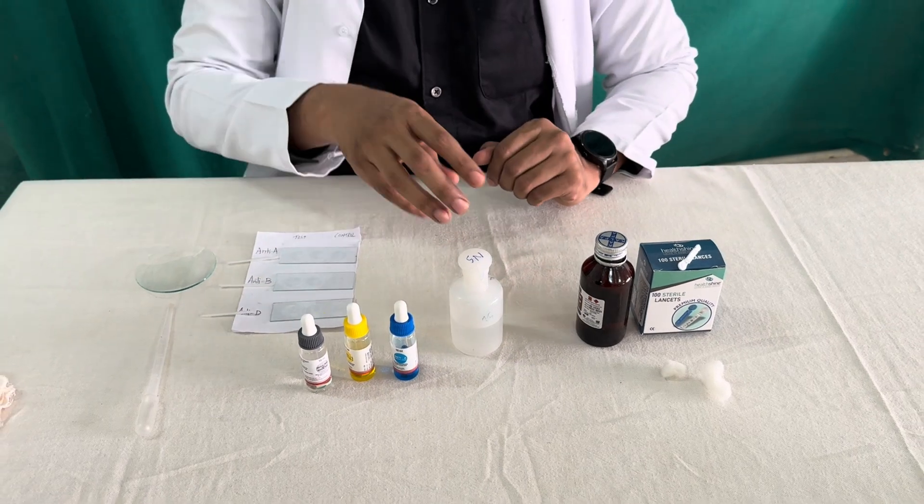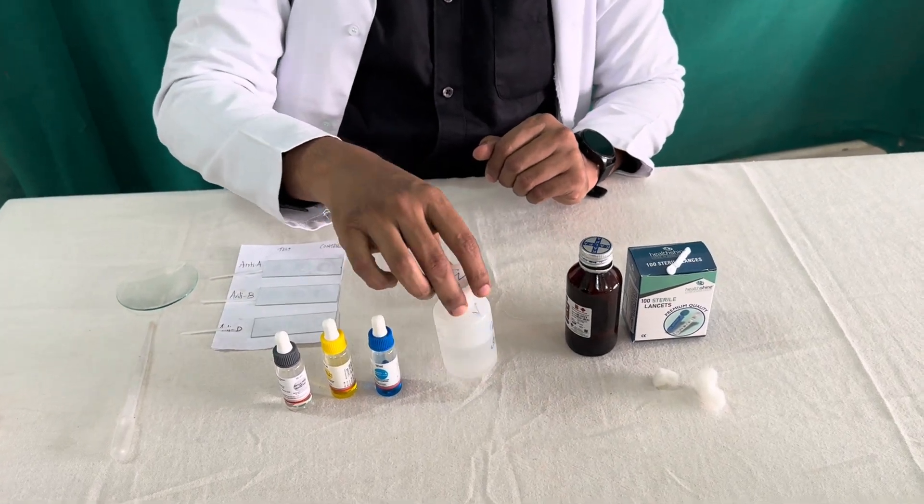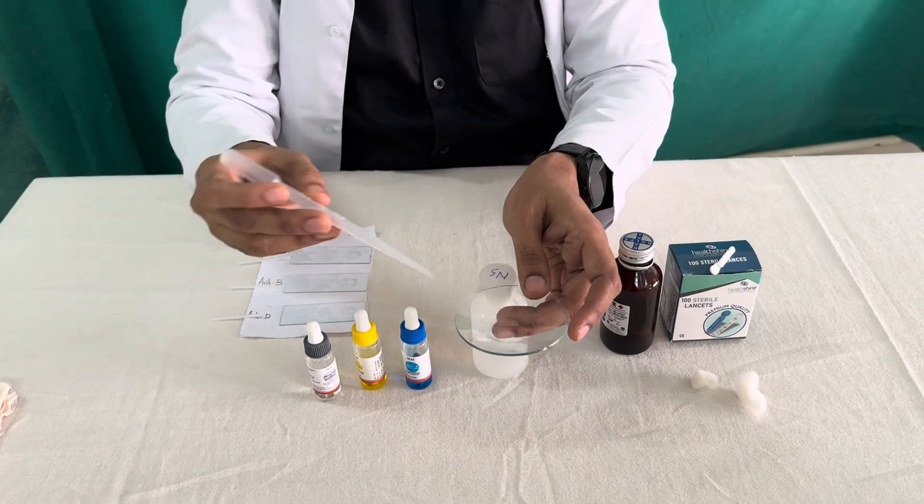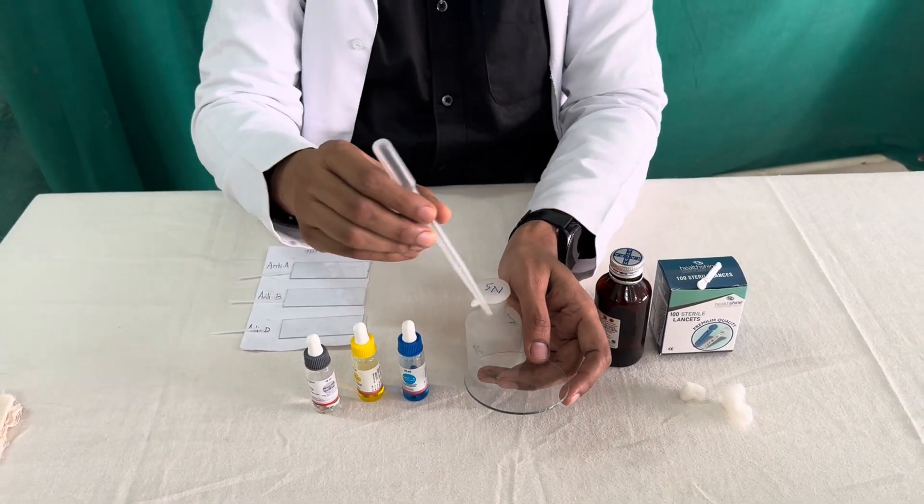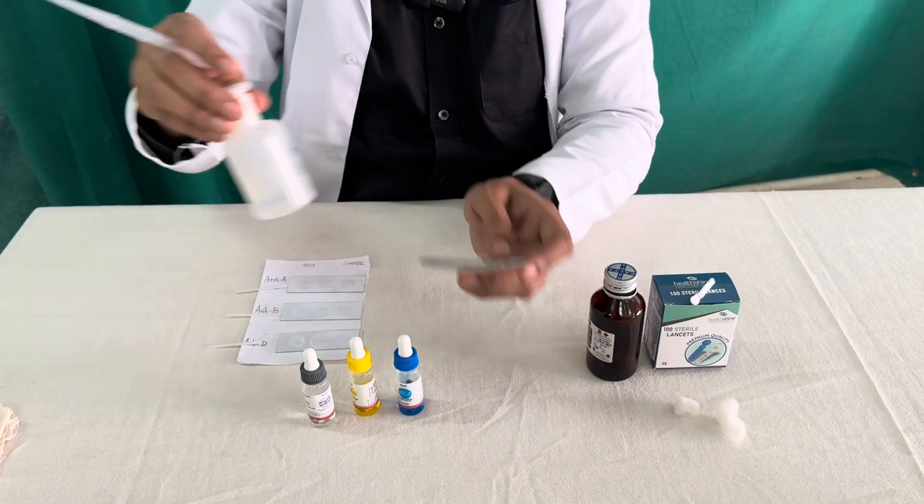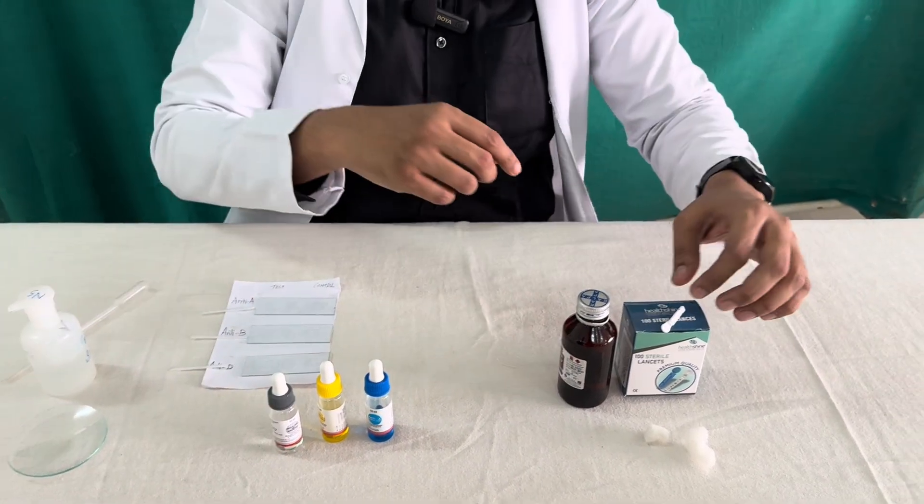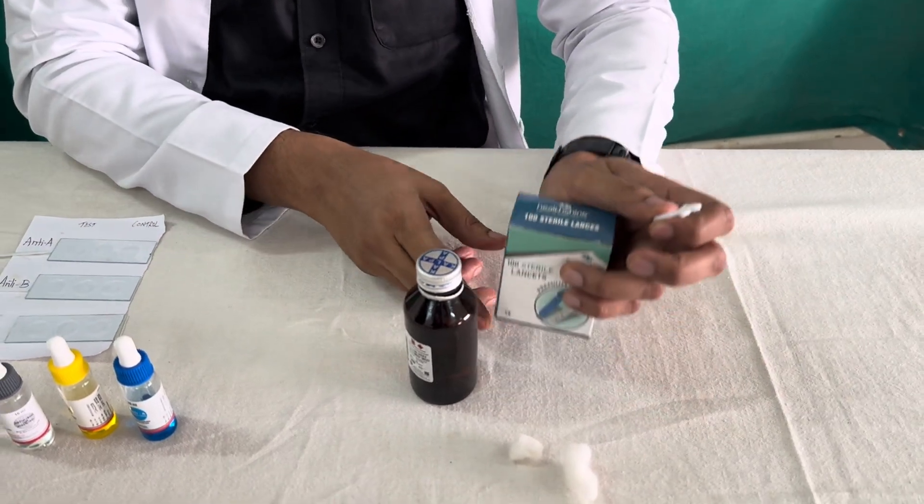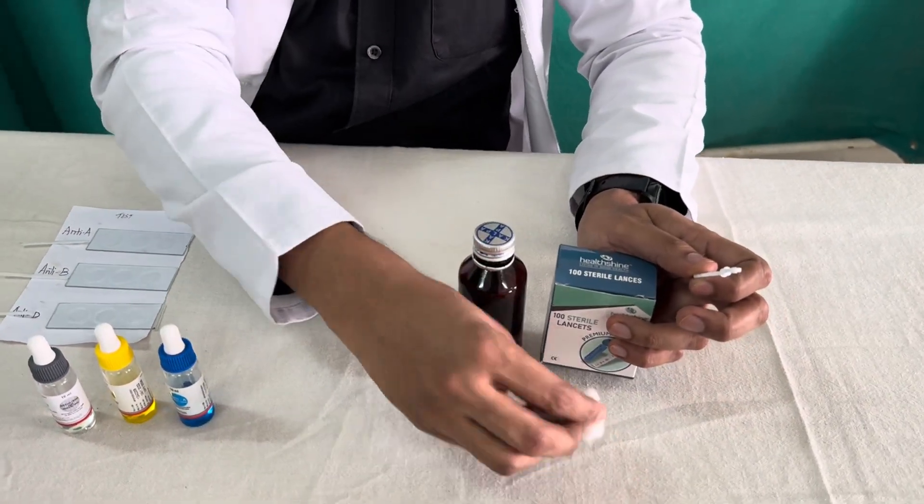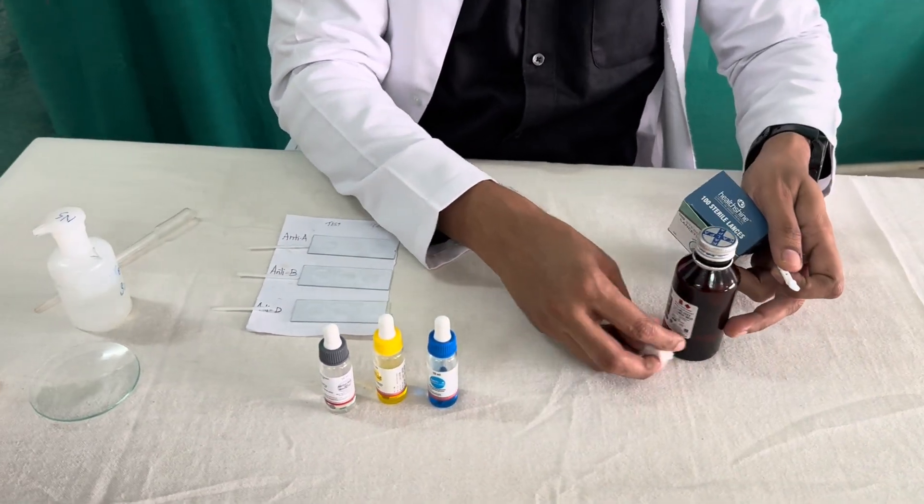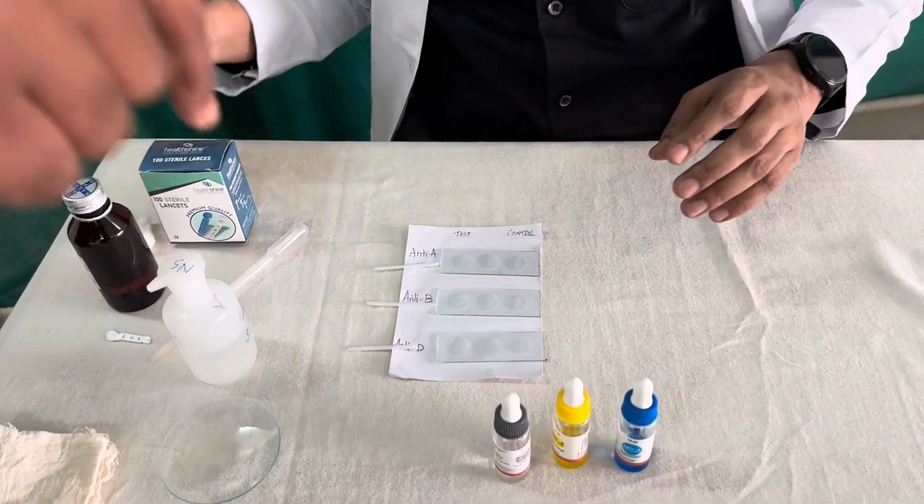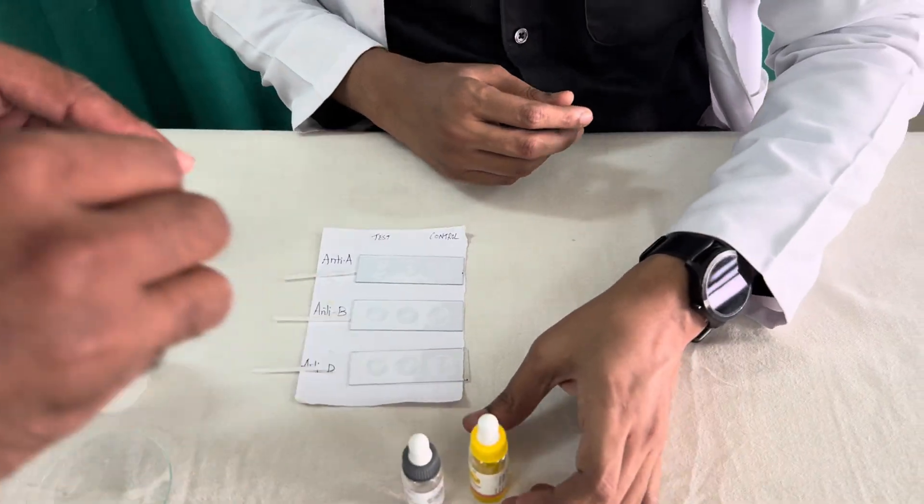Apart from these main things, we require normal saline, a watch glass or test tube, a dropper or pipette to mix the normal saline with the blood. Then a few things for aseptic removal of the blood: a sterile lancet, spirit, cotton swab or gauze pieces. So with these instruments, now we will try to determine the blood group.